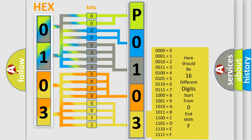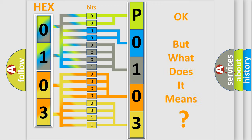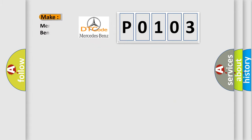We now know in what way the diagnostic tool translates the received information into a more comprehensible format. The number itself does not make sense to us if we cannot assign information about what it actually expresses. So, what does the diagnostic trouble code P0103 interpret specifically for Mercedes car manufacturers?